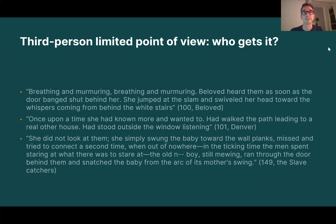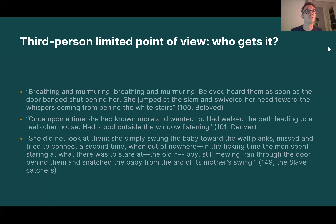'She did not look at them. She simply swung the baby towards the wall planks, missed, and tried to connect a second time. Out of nowhere, in the ticking time the men spent staring at what there was to stare at, the old boy still mewing ran through the door behind them and snatched the baby from the arc of its mother's swing.' That's the point of view of the slave catchers. Just like Frances Harper, Toni Morrison does not let us into the mind of the mother who's killing her child. We are denied that point of view. Pay attention to whose point of view we're denied and when — it's very important to understanding how this novel is put together.